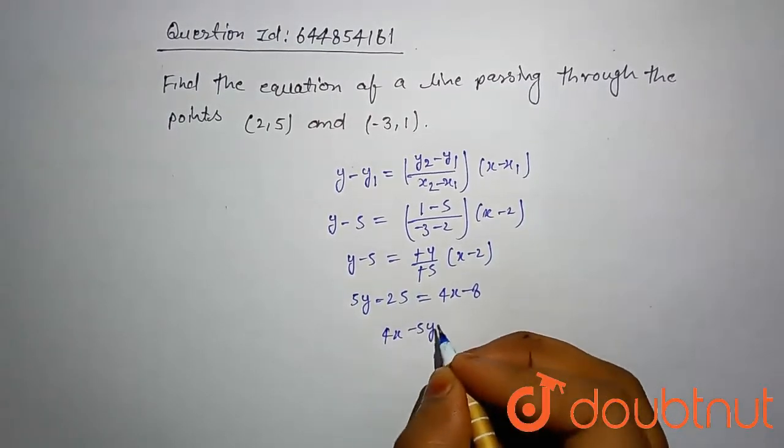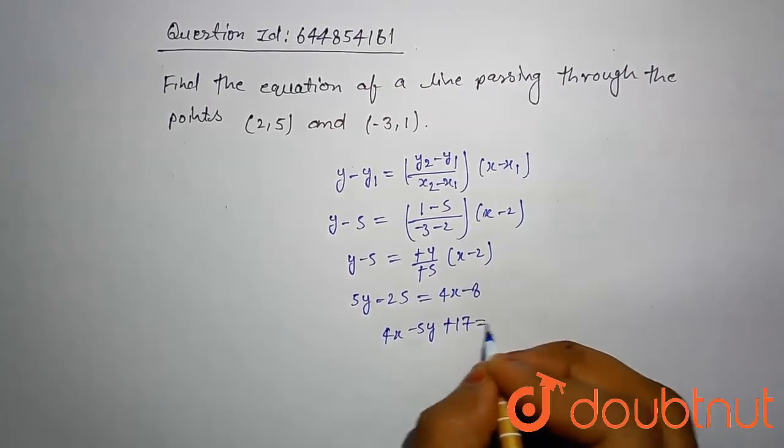This comes out 4x minus 5y plus 17 equal to 0.